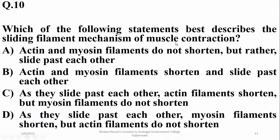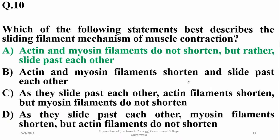Which of the following statements best describes the sliding filament mechanism of muscle contraction? Actin and myosin filaments slide past each other rather than actually contracting. So alpha is the correct answer.